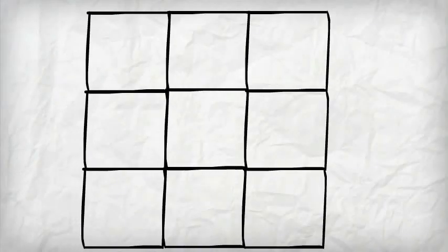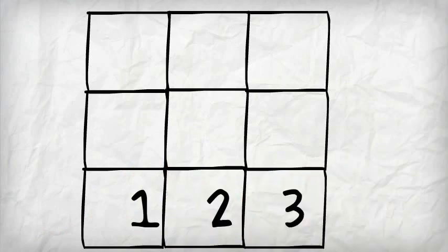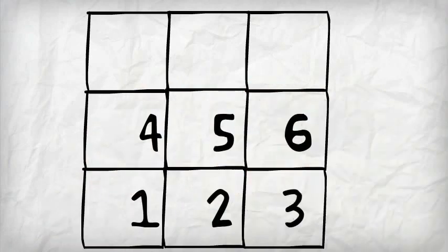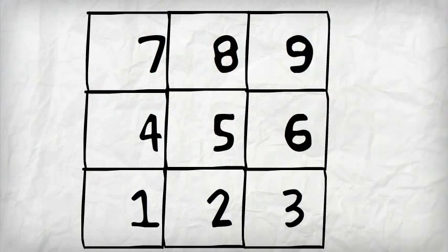Make the tic-tac-toe chart. Start counting from 1: 1, 2, 3, 4, 5, 6, 7, 8, 9.